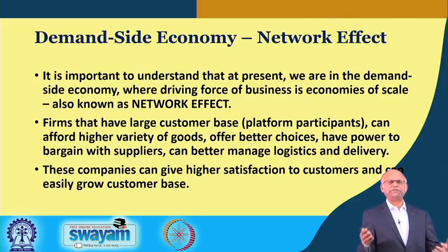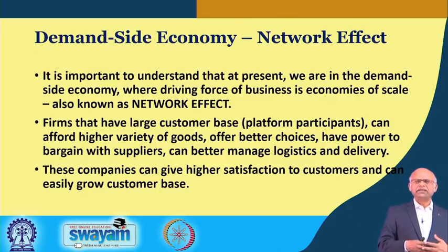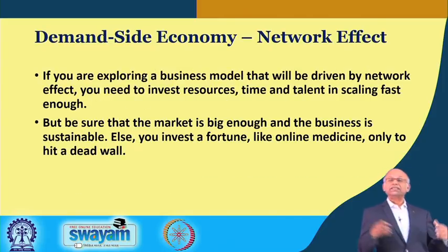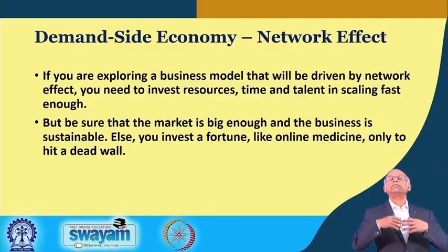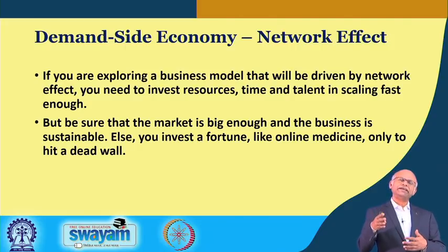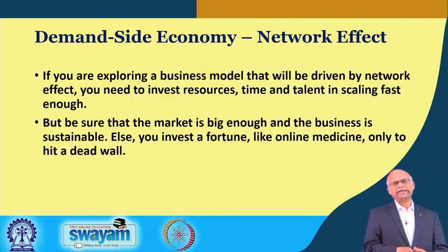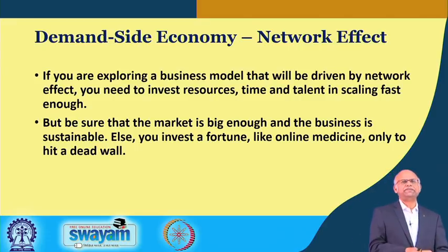Firms that have a large customer base can afford higher variety of goods and give higher satisfaction to customers. Because they buy in bulk, their cost of acquiring goods is lower compared to others, and they can sell at a lower price and easily grow their customer base. Supply-side economy: the competitive advantage is derived by putting up huge scale of production — if manufacturing in huge numbers, cost of production per unit goes down and you can entice customers to buy more at a lower price. Today's business is often a combination of both, and many companies are smartly combining the two to gain advantage.